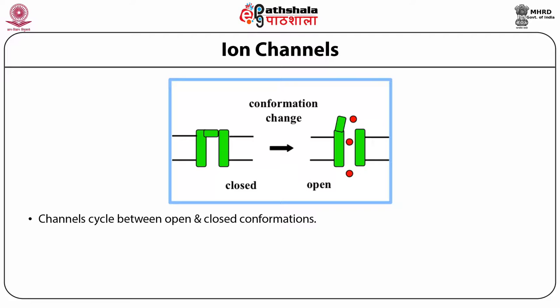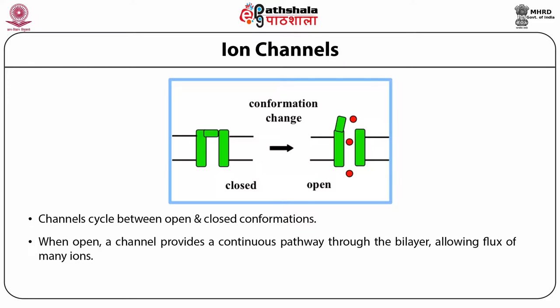Ion channels can be further classified into three categories: leaky channels, gated channels, and ligand-gated or voltage-gated channels. Leaky channels allow ions to freely move across them down their concentration gradient. Gated channels are not always open — they respond to certain signals and can be regulated. Ligand-gated channels open when specific molecules bind to the receptor. Voltage-gated channels open or close in response to changes in membrane potential. A good example of an ion channel ionophore is gramicidin.